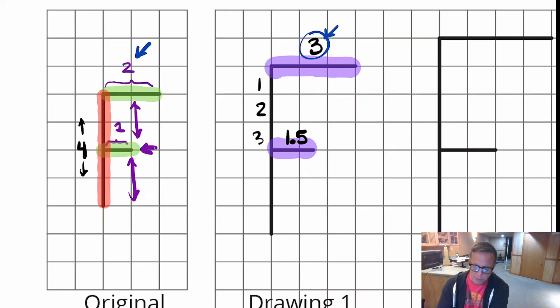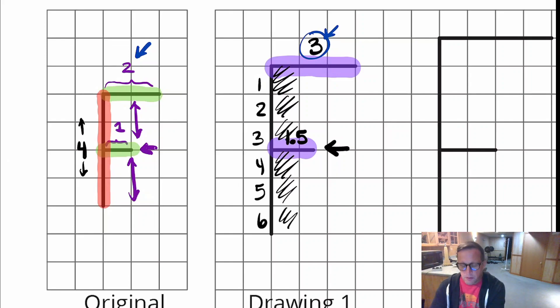It's one, two, three, four, five, six squares tall. Those are centimeters, so six centimeters tall. And lastly, that middle short part of F right there, that is exactly right in the middle. There's three boxes above it and then there's three boxes below it. So it's right there in the middle. So you can say this one, without a doubt, is scale.